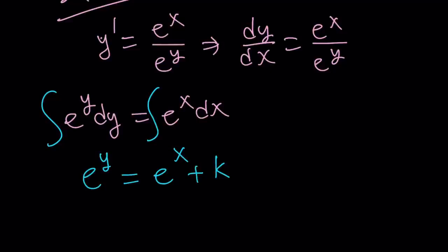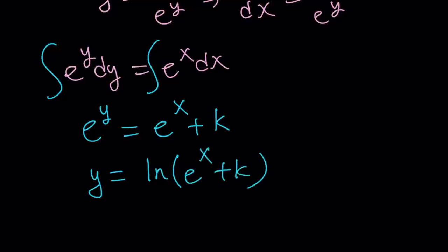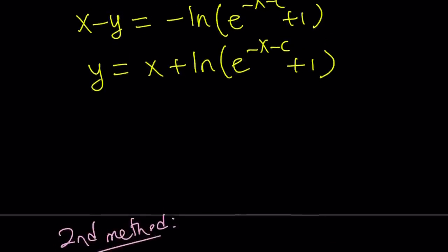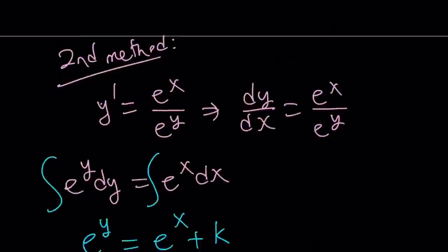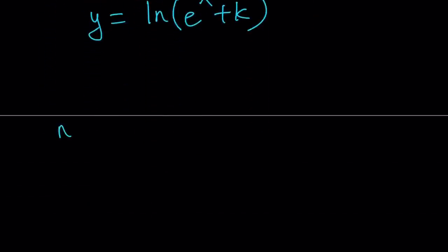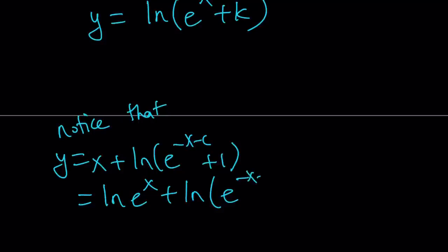So we can take ln of both sides and solve for y, and y becomes ln of (e to the power x plus k). You might notice that's not the same answer as Method 1. Let's work on the Method 1 expression: y equals x plus ln of (e to the power negative x minus c plus 1). We can write x as ln of e to the power x, so this becomes ln of e to the power x plus ln of (e to the power negative x minus c plus 1).